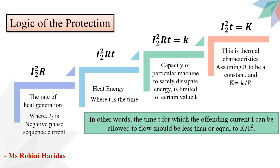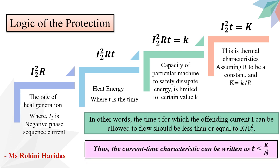In other words, the time T for which the offending current I₂ can be allowed to flow should be less than or equal to K/I₂². Thus, the current-time characteristic can be written as T ≤ K/I₂². This characteristic is similar to that of the inverse time over-current relay. Thus, an inverse time over-current relay which is fed with the negative sequence component of the stator current gives protection against unbalanced loading of the generator.